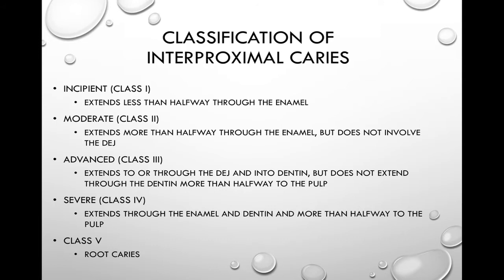You've already learned about the GV Black classifications of caries, but GV Black is more about caries interpreting for restorations. Classification of interproximal caries is something completely different — make sure you separate these two in your mind. The five categories for classification of interproximal caries include: class one, incipient; class two, moderate; class three, advanced; class four, severe; and class five, root caries.